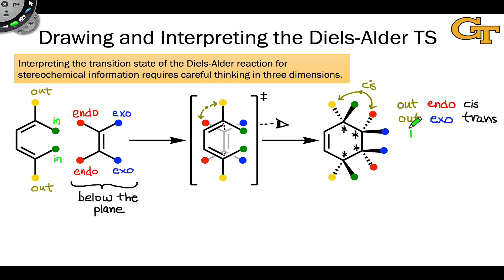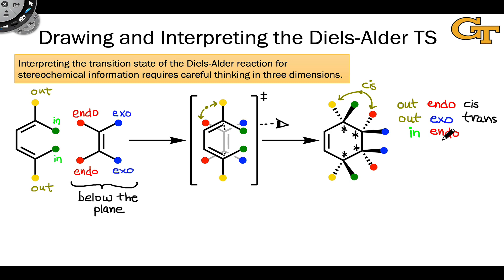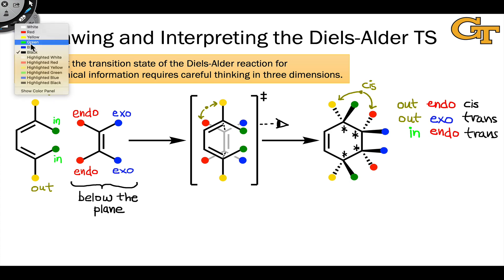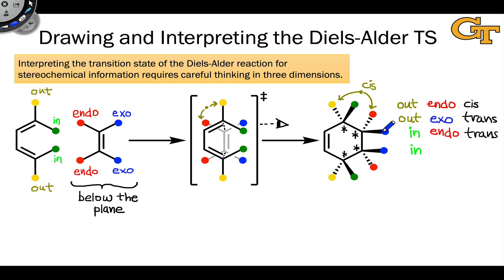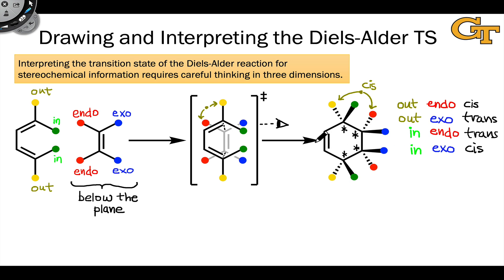Turning to in groups — groups pointed inside the C shape of the diene — and looking at their orientation relative to endo groups in the dienophile, these have a trans relationship. Notice that a red group relative to a green group shows one up and the other down, confirming the trans relationship. Continuing the toggle idea: if we switch one, the configuration changes, so in groups in the diene relative to exo groups on the dienophile have a cis relationship — as seen with the green in-group and the blue exo-group.